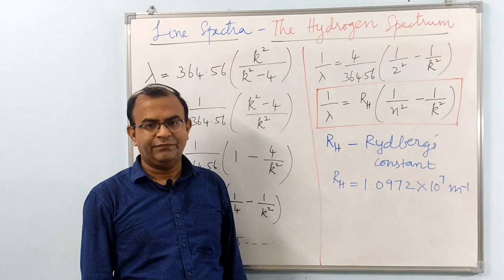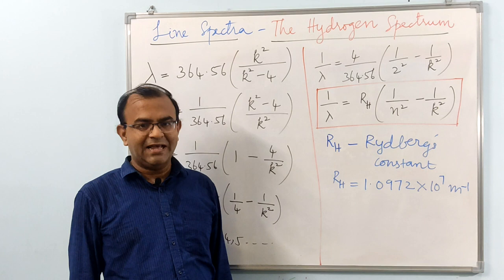For k values equal to 3, 4, 5 and 6, we get all the 4 visible lines of the hydrogen spectrum. These 4 lines corresponding to the Balmer series fall in the visible part of the hydrogen spectrum.